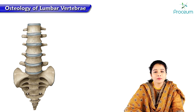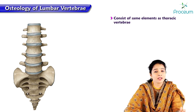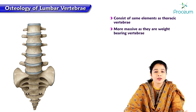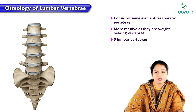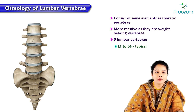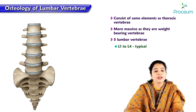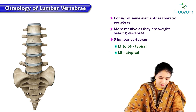Lumbar vertebrae consist of the same elements as thoracic vertebrae but are more massive as they are weight-bearing vertebrae. There are five lumbar vertebrae, of which the first four, L1 to L4, are typical and L5 is atypical.